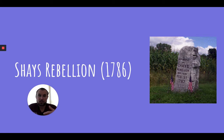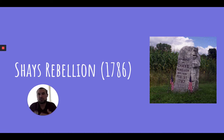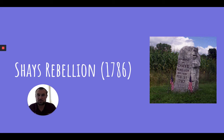However, wealthy New Englanders basically paid for a militia because Congress could not raise an army. These rich New Englanders funded a militia to fight Daniel Shays' forces, which they defeated. But what this really did was scare people that the central government under the Articles of Confederation couldn't do anything. This led to strong supporters calling for a stronger, more centralized government.